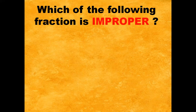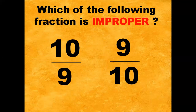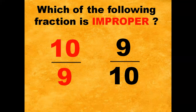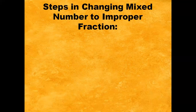Last. Which of the following fractions is improper? Ten-ninths or nine-tenths? Go! The correct answer is ten-ninths. Now, let's proceed to the steps in changing a mixed number to an improper fraction.